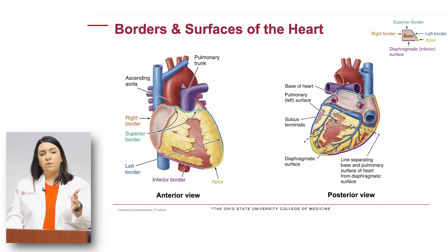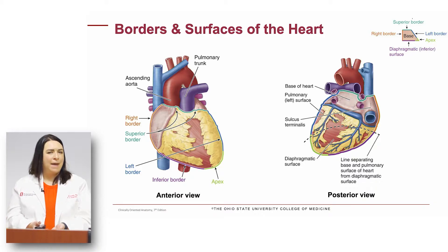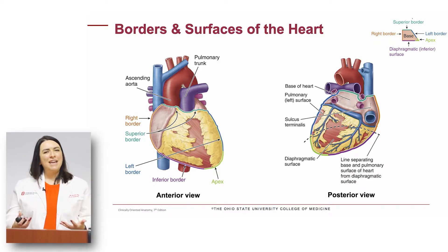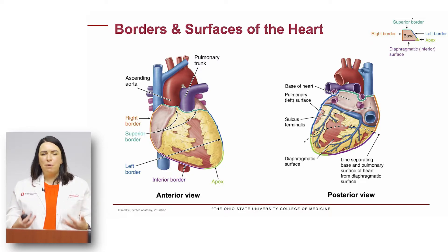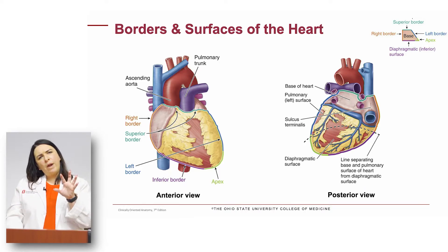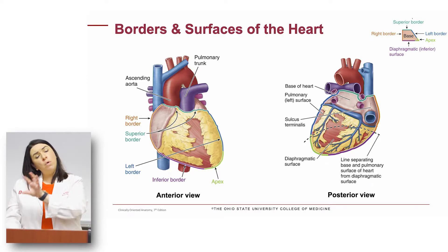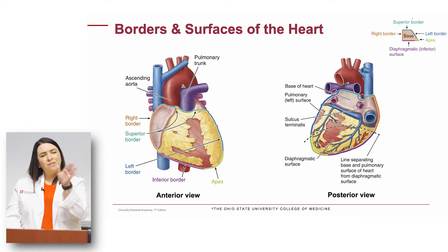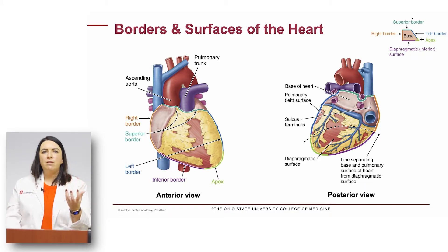We also see a surface that sits on the diaphragm — the inferior or diaphragmatic surface. Think about when you're breathing: every time you breathe, your diaphragm drops a little, and so does your heart. It's a very dynamic structure — very mobile, it's moving. We want to be aware of these surfaces and borders so that when you look at a chest X-ray or ultrasound, you can understand where you are anatomically: what border am I looking at, what vessel is coming in on that right side of the heart?